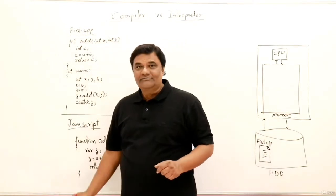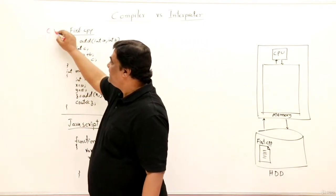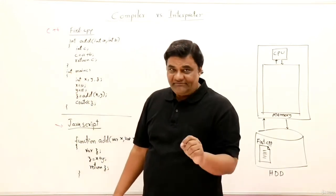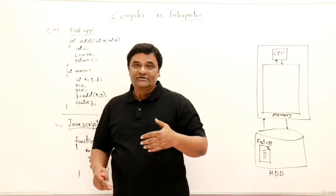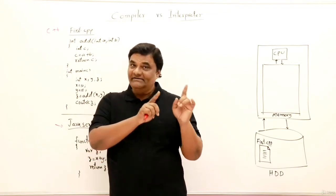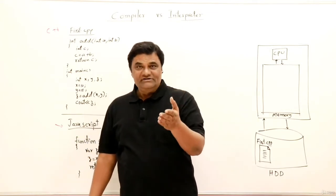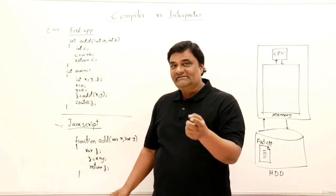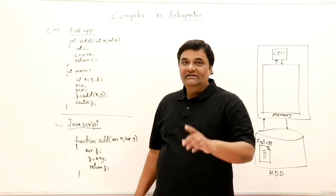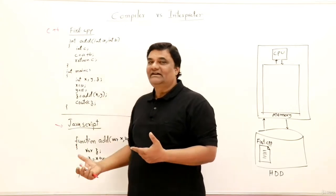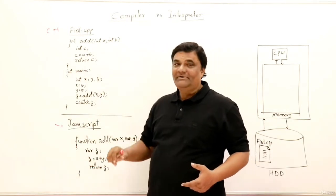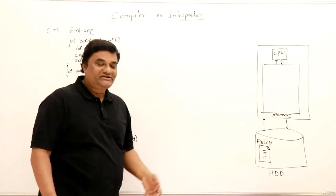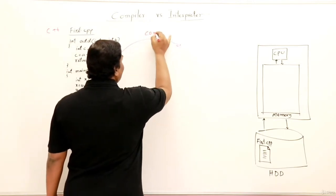For comparison, I have taken two example programs. This source code is written in C++ and this source code is written in JavaScript. C++ is a compiler-based language. JavaScript is used for writing web pages, runs inside the browser, and is interpreter-based. Both are source code — not machine code — understandable by the compiler or interpreter and by human beings.